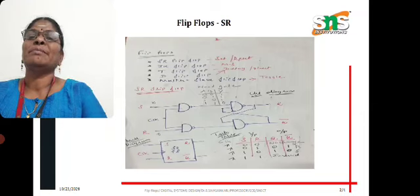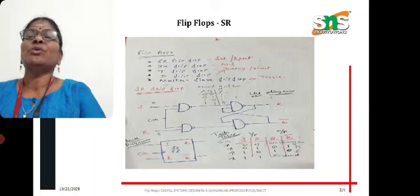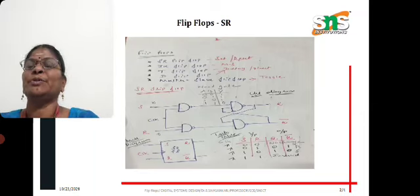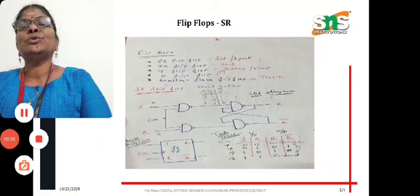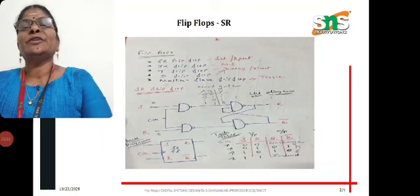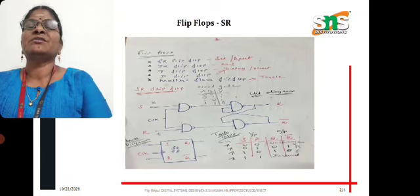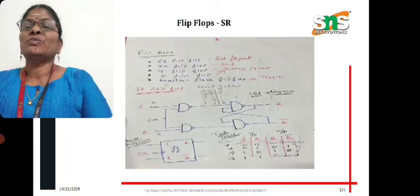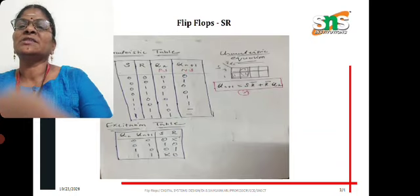So when inputs S and R are both 0, there is no change in the output — Q(N+1) equals the present state (no change). When S=0 and R=1, the output Q is 0 and Q bar is 1 — this is the reset state. When S=1 and R=0, the output is Q=1 and Q bar=0 — this is the set state. When S=1 and R=1, this is an invalid condition. So the four conditions are: no change, reset, set, and invalid.